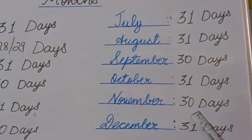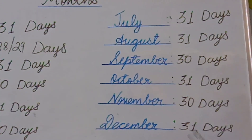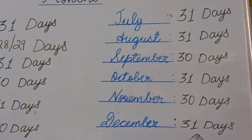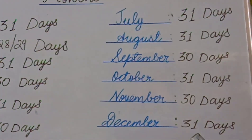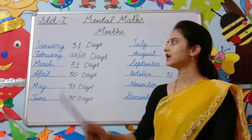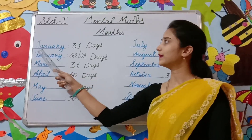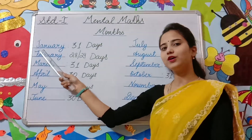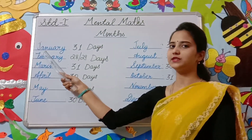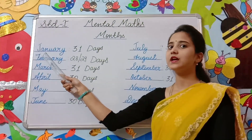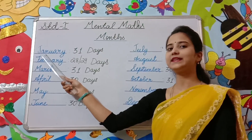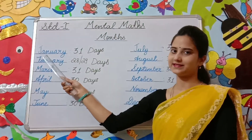Thirty-one days in November. Thirty-one days in December. The months of the year are also special names. They always begin with capital letters.